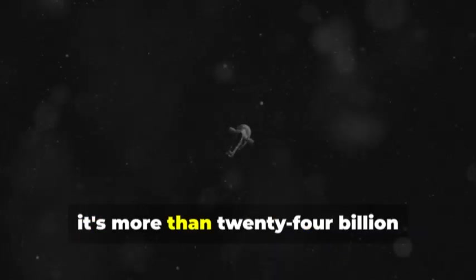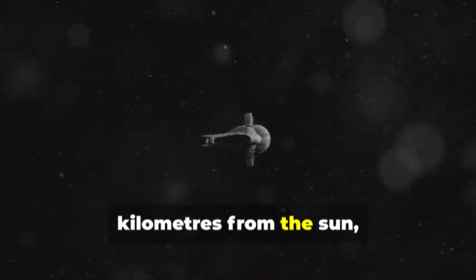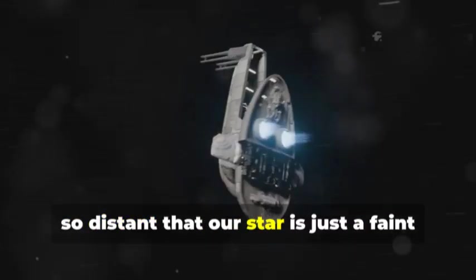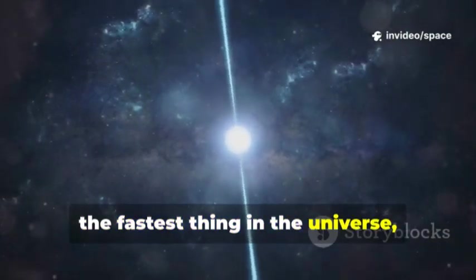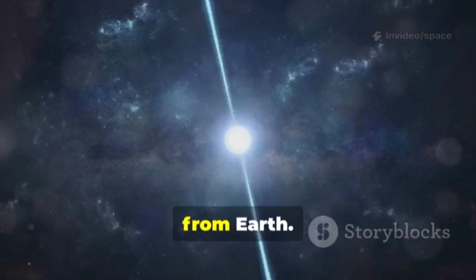Right now, it's more than 24 billion kilometers from the sun, so distant that our star is just a faint glimmer in the darkness. Even light, the fastest thing in the universe, takes over 22 hours to reach it from Earth.